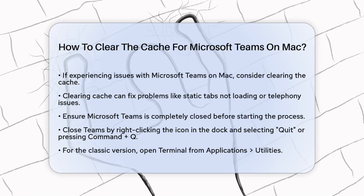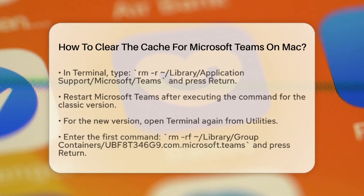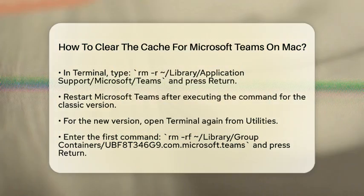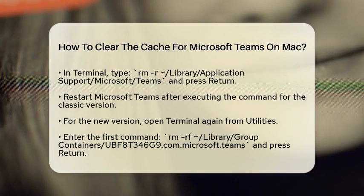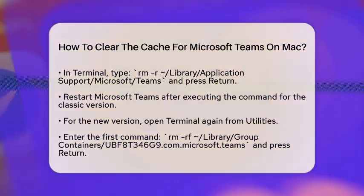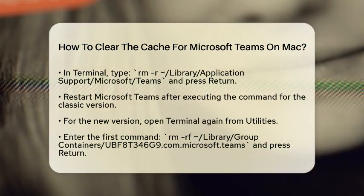Now, if you are using the classic version of Microsoft Teams, here is what you need to do. Open the Terminal application. You can find it by going to Finder, navigating to the Applications folder, then to Utilities, and double-clicking on Terminal. Once the Terminal is open, type the following command and press Return.